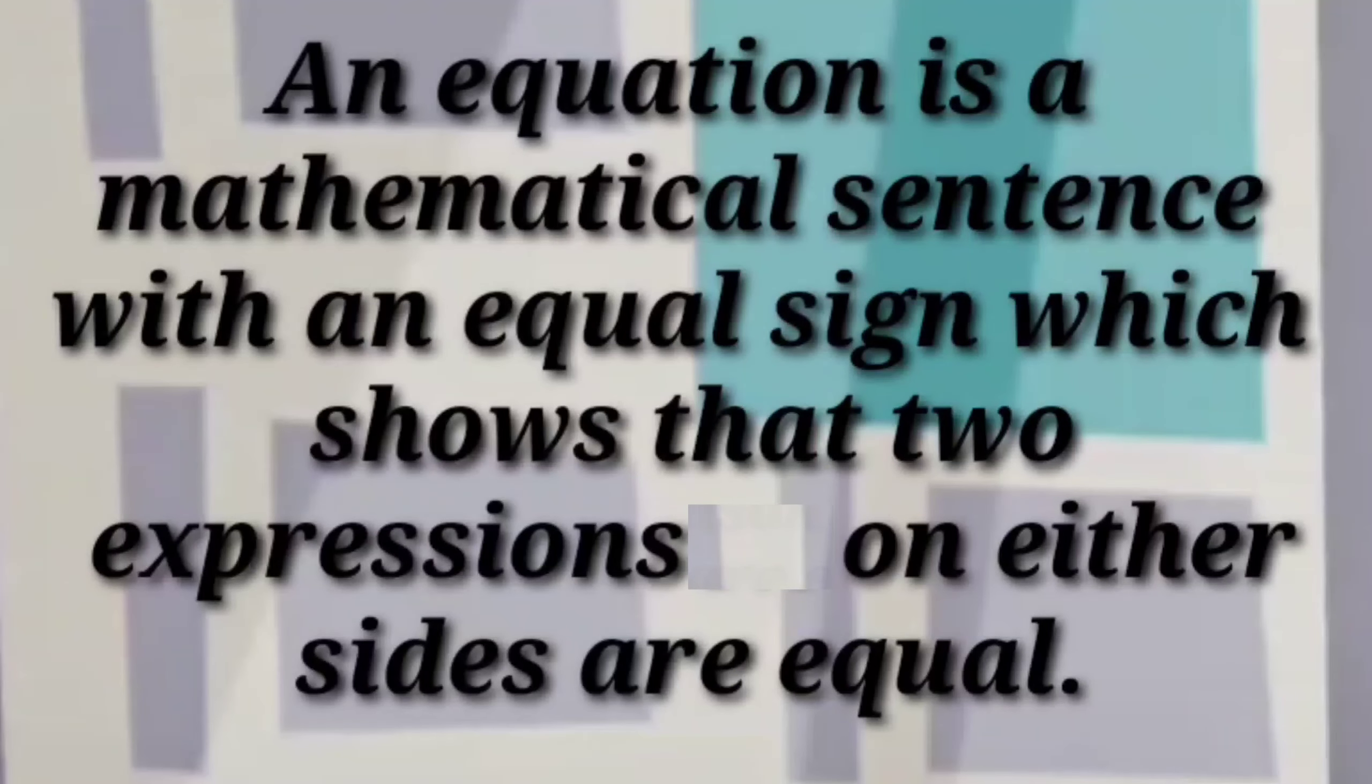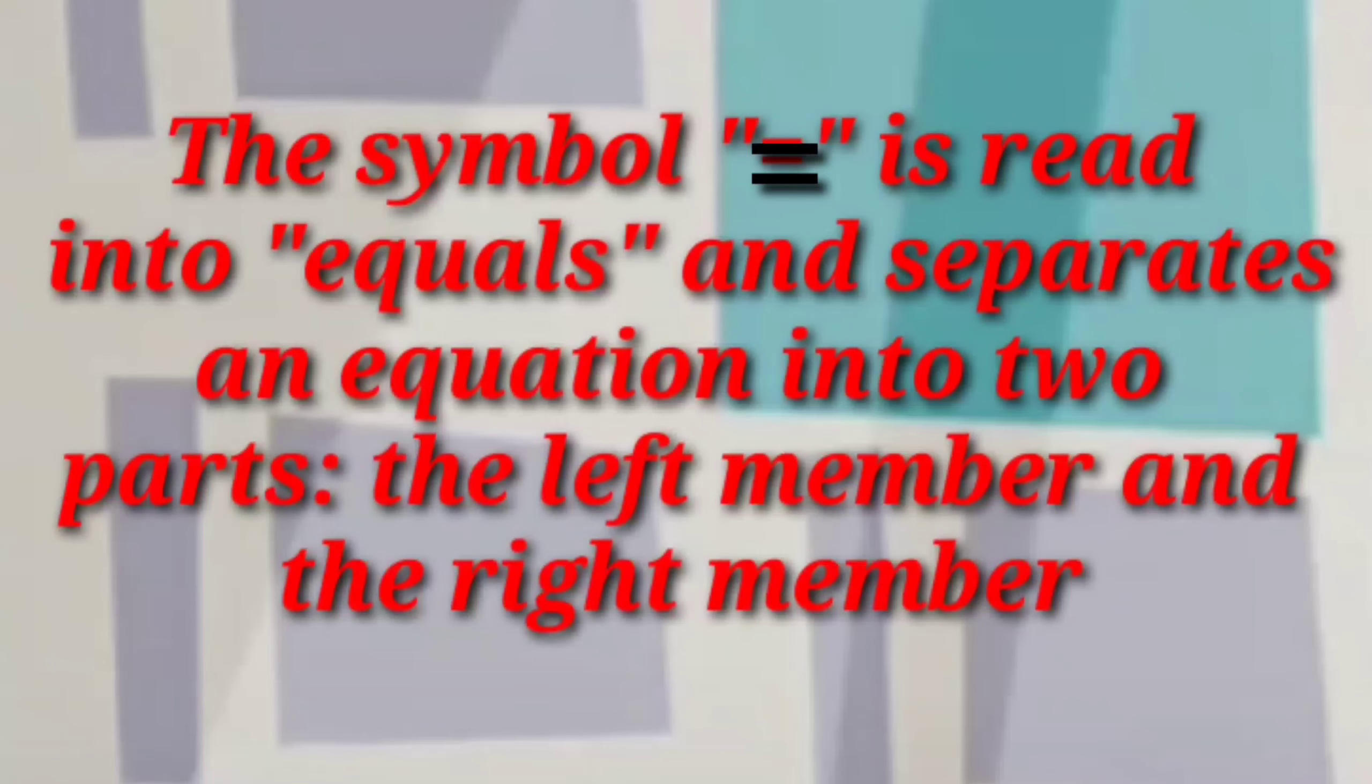Algebraic Equations. An equation is a mathematical sentence with an equal sign which shows that two expressions on either side are equal. The symbol equals is read into equals and separates an equation into two parts: the left member and the right member.